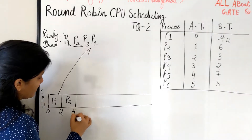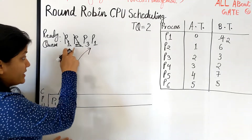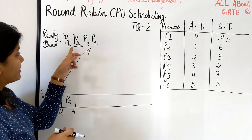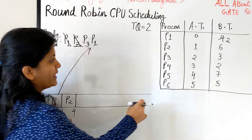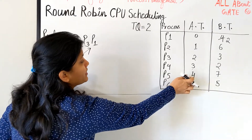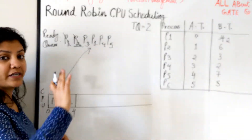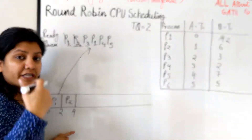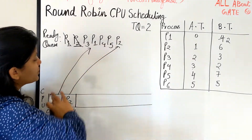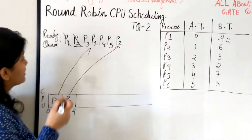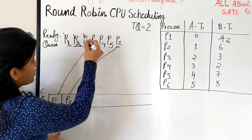P2 needs six burst units; we're giving two at a time. P2 gets two units and finishes one quantum. By the time we go from 2 to 4, P4 arrives at time 3 and P5 arrives at time 4, so they are placed in the ready queue. P2 also needs further burst, so it goes back to the ready queue too. Next in the queue is P3.